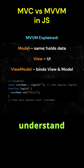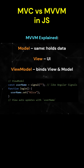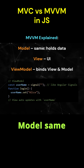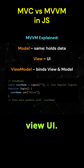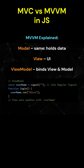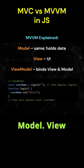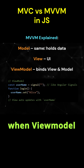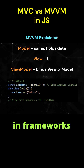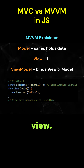Let's understand the MVVM pattern. Model — same as before — holds data. View is the UI. ViewModel binds the view and the model. The view auto-updates when the ViewModel changes. This is used in frameworks like Angular and Vue.